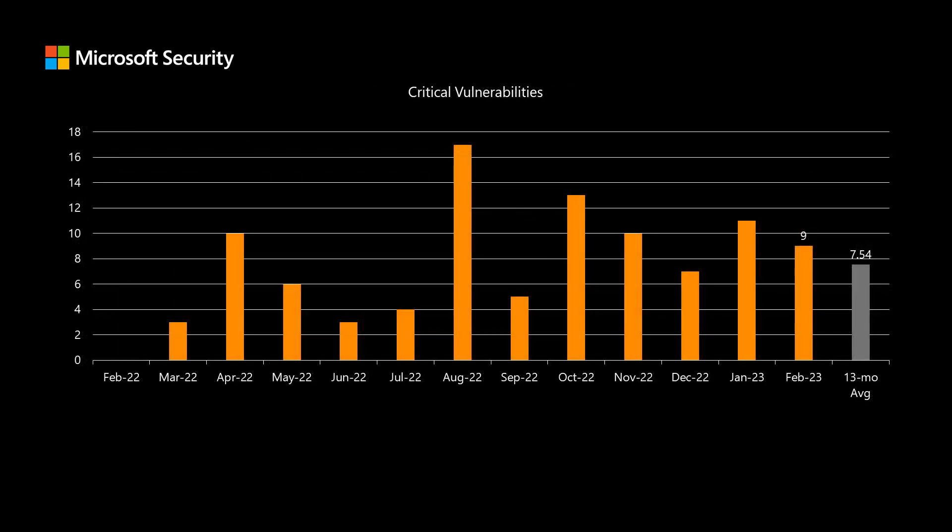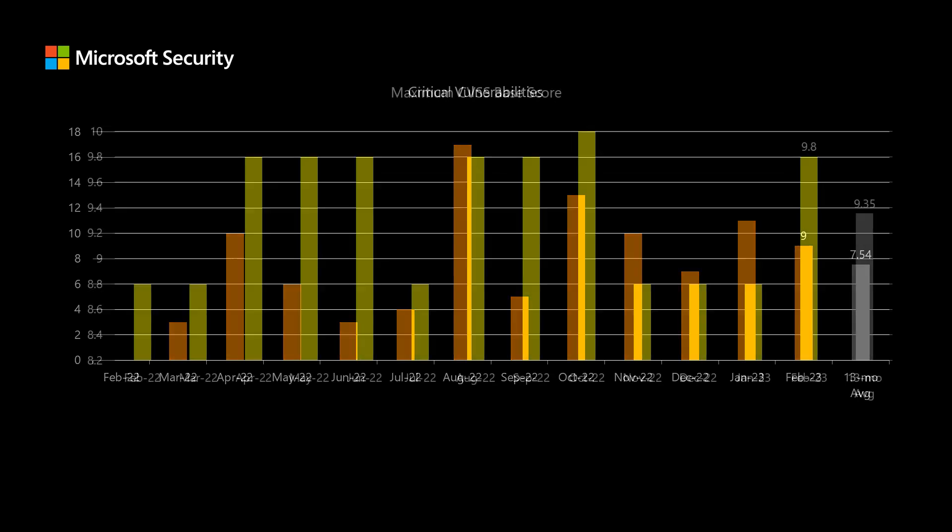Next I'll talk about critical vulnerabilities. Critical is a severity rating that's proprietary to Microsoft. There are three different severity ratings: moderate, important, and critical. This month there are nine total vulnerabilities that hit that critical severity, which is a little bit above our average of around seven and a half.